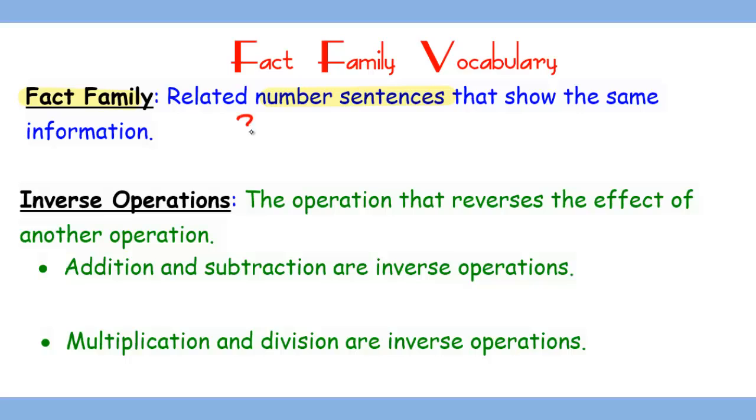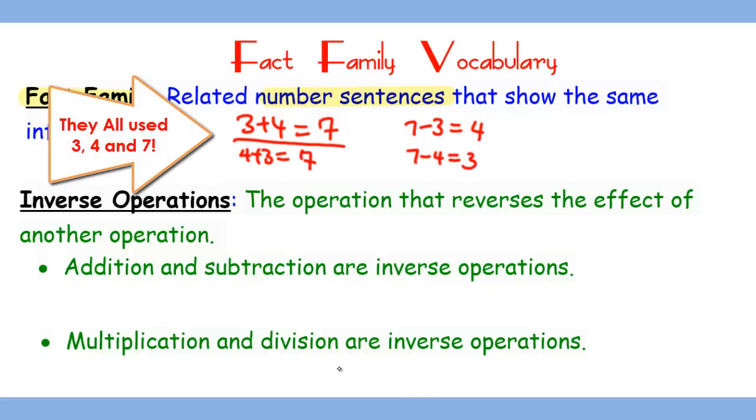For example, 3 + 4 = 7, and a related fact can be 4 + 3 = 7, 7 - 3 = 4, or 7 - 4 = 3. So the most important thing to create a fact family is using the same numbers.